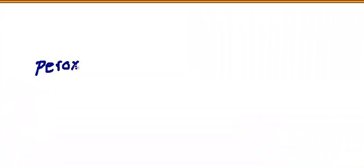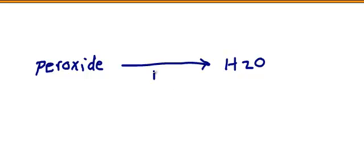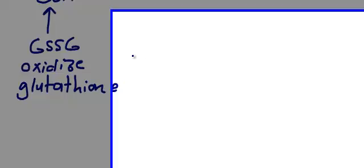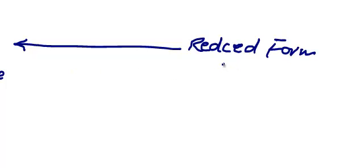The third topic in hemolytic anemia is Glucose-6-Phosphate Dehydrogenase deficiency. First, you need to know this pathway. Peroxide is dangerous to the body, so peroxide has to be converted into H2O, which is water. For this conversion, you need glutathione. The body supplies glutathione via GSSG, which is oxidized glutathione. Usually the body has the reduced form of glutathione, and this reduced form is already present in the body.